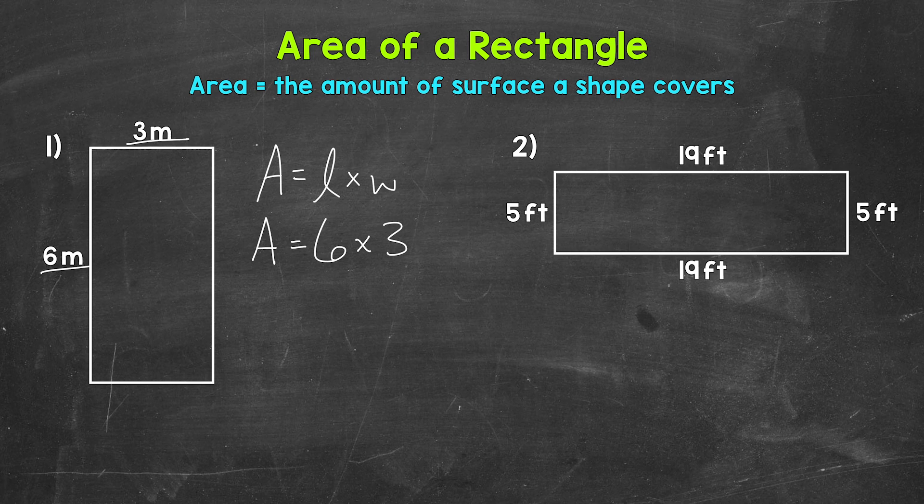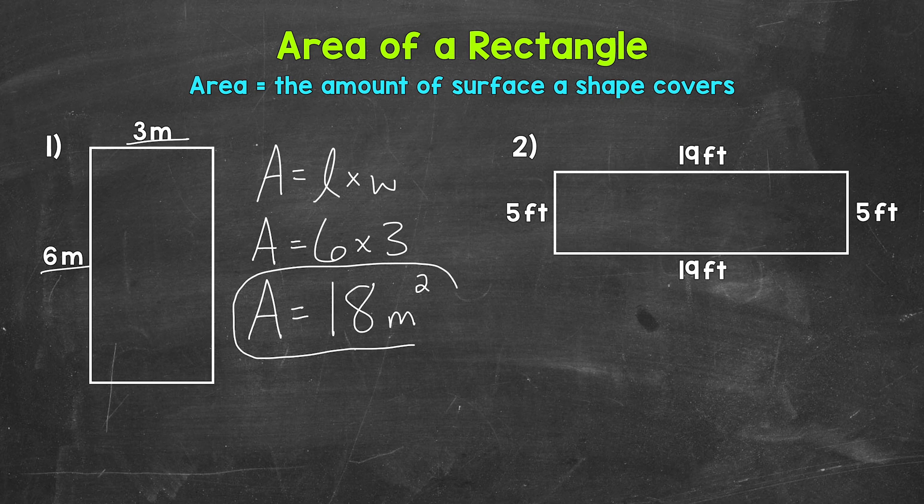And now we can multiply. 6 times 3 gives us an area of 18 square meters. We measure area in square units, so this is square meters.